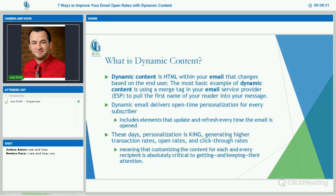Dynamic email delivers open-time personalization for every subscriber and includes elements that update and refresh every time the email is opened. These days personalization is king, generating higher transaction rates, open rates, and click-through rates. It means customizing the content for each and every recipient is absolutely critical to getting and keeping their attention. When I see my name in an email, I'm more apt to open it — or if a brand knows your likes, like how Amazon shows you products you might like when you buy something. That's the kind of personalization we like to see nowadays.